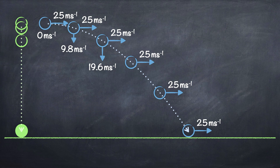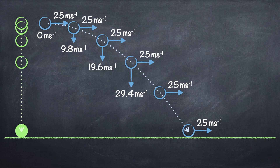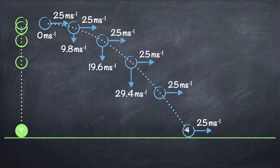3 seconds after being projected, the vertical speed will be 29.4 m/s — that's just 3 lots of 9.8 m/s, since vertically the projectile's speed increases by 9.8 m/s every second on Earth. The green circles on the left-hand side of the screen indicate that at all times the two ball bearings are always at the same vertical position, since they take the same time to fall to the ground.